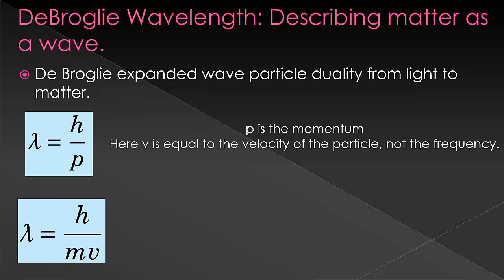From here, we get the equation of the De Broglie wavelength being equal to h over the momentum, h once again being Planck's constant.